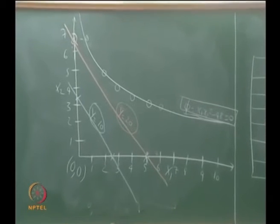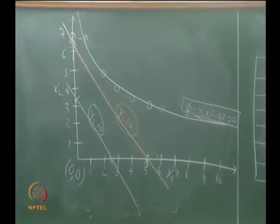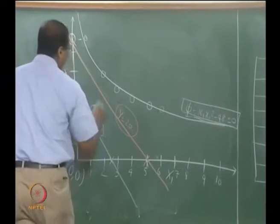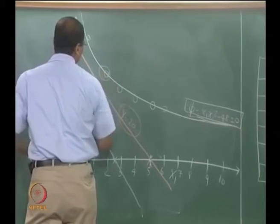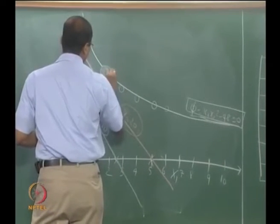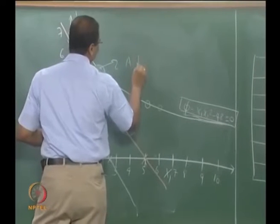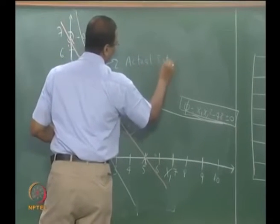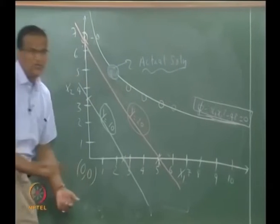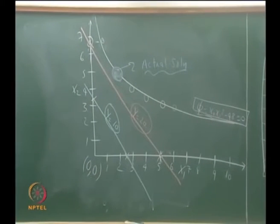What is the actual solution you got? Actual solution is somewhere here, right? What do you mean by actual solution? The solution we obtain using the Lagrange multiplier method.